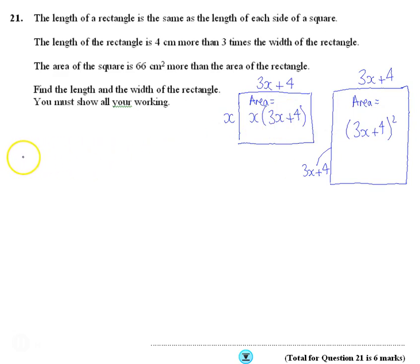So I can write an equation. I can say that if I multiply this out, 3x squared plus 4x plus the 66, because it says the square is 66 more, is equal to the double bracket 3x plus 4, 3x plus 4.